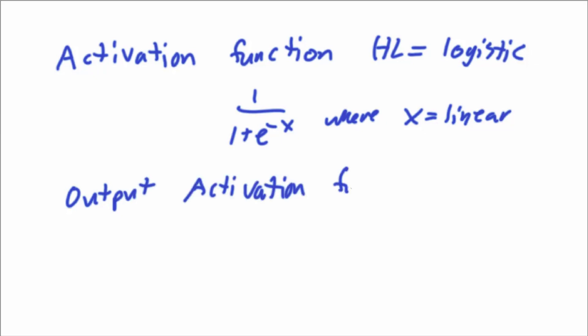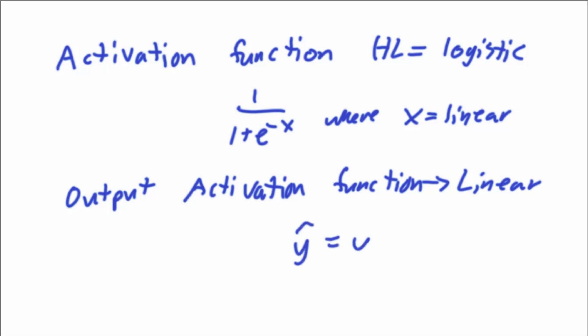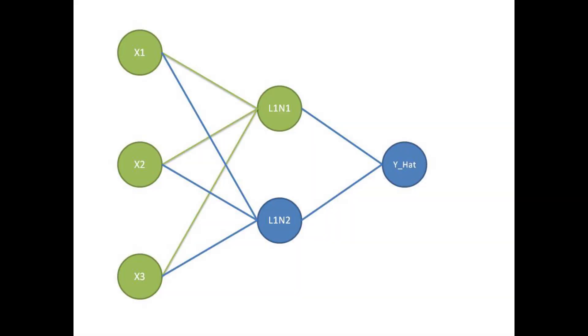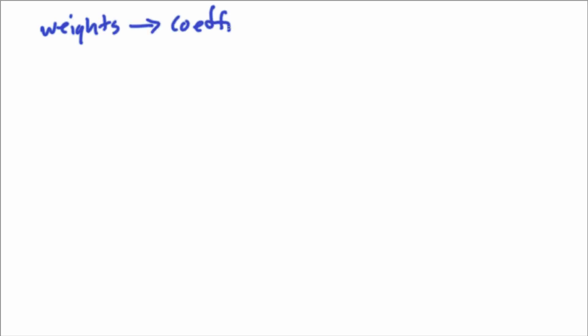The output activation function we're going to use today is called linear, which means we're just not going to use an activation function at the output. So the output y-hat is essentially equal to itself — I know mathematically that sounds odd, but you'll see how it works in the example. Now, when you look at this chart, we have x1, x2, and x3 as input variables. To calculate L1N1, we randomize our weights and biases. If you're a statistician, weights are just coefficients, and biases are the same as an intercept term.